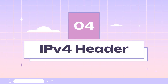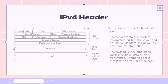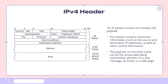When data is transmitted over Layer 3, it is encapsulated in IP packets. An IP packet consists of a header and payload. The header contains important information, such as the source and destination IP addresses, as well as other control information. Think of the header as an envelope that carries the data to its intended recipient. The payload carries the actual data being transmitted, whether it's a text message, an email, or a web page.